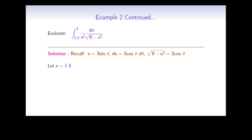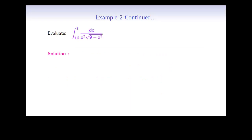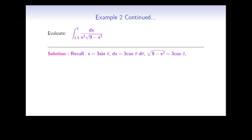We also need to change the limits of integration to correspond to the new variable theta. If x equals 1.5, then 1.5 equals 3 sine theta, so sine theta equals 1/2, which means theta equals π/6 on the interval −π/2 to π/2. If x equals 3, then sine theta equals 1, so theta equals π/2. We have now found all the details of this substitution along with the new limits of integration.